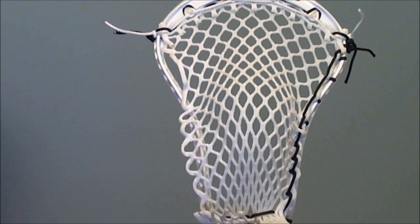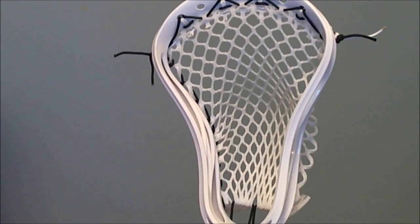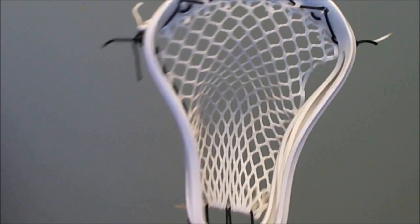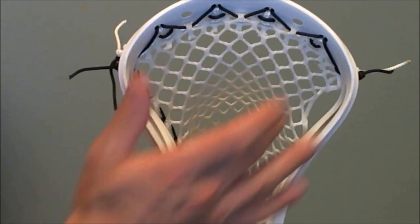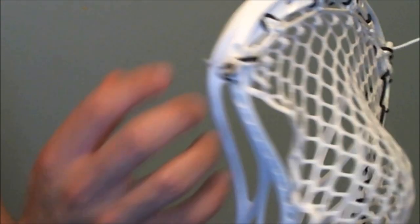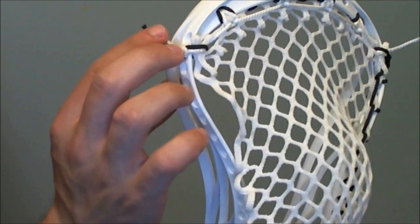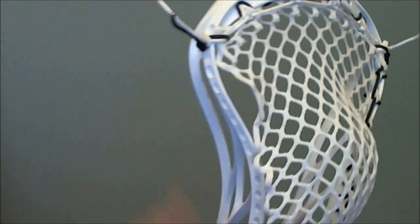Alright guys, so now we're going to do up the sidewall on the Warrior EVO 4 with our 15mm East Coast mesh and a mid pocket. So you can see I've already got the 9 diamond top string installed and that is done on the second sidewall hole. So there's the first one. I made it down on the second one just to keep it really nice and tight.